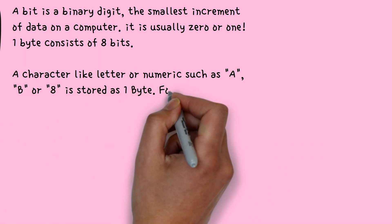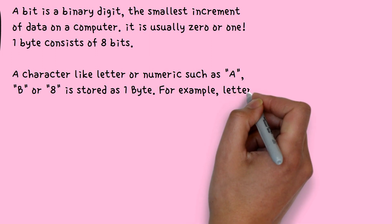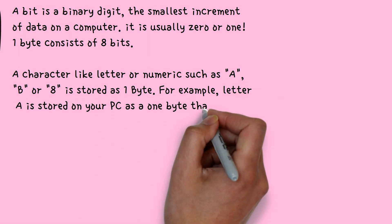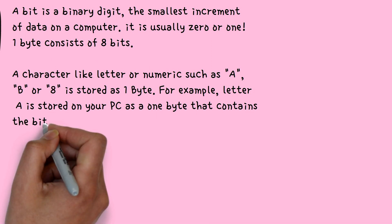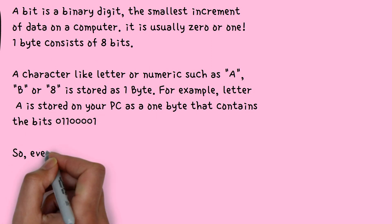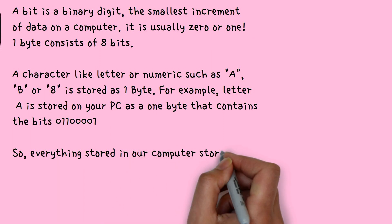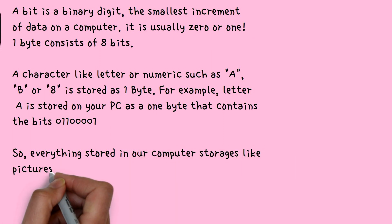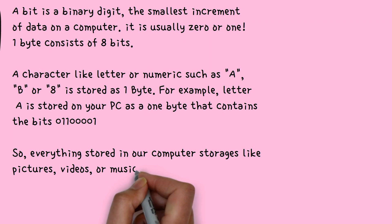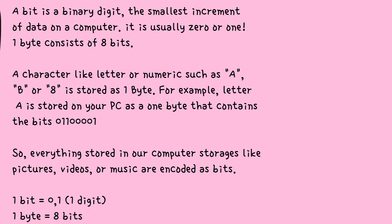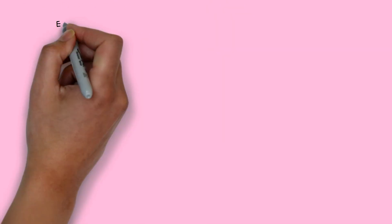For example, letter A is stored on your PC as one byte that contains the bits 01100001. So everything stored in our computer storages like pictures, videos, or music are encoded as bits. Remember, one bit is zero or one, and one byte is eight bits.